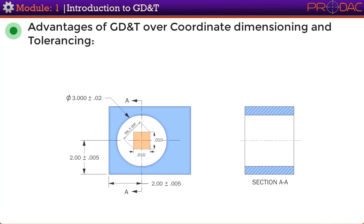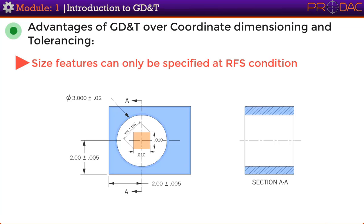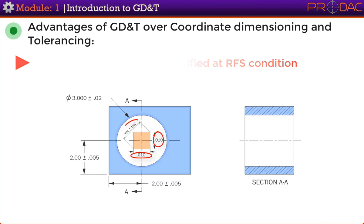Size features can only be specified at the regardless-of-feature-size condition, meaning the location tolerance remains the same no matter what size the feature happens to be within its size tolerance. As seen in this part, the horizontal and vertical tolerance of the center position is the same, but diagonally it is different. This is one limitation of plus/minus tolerancing.